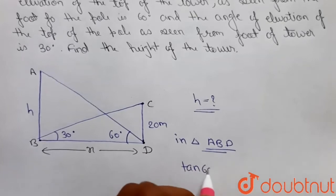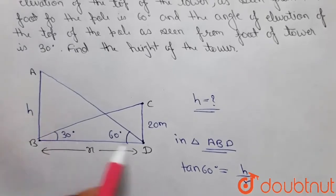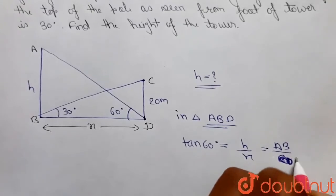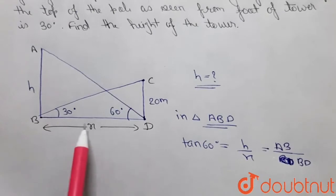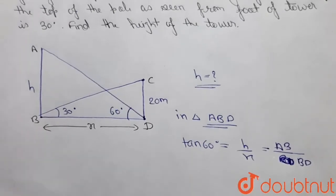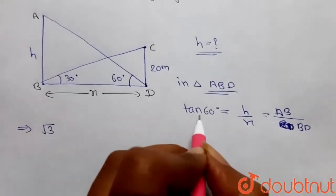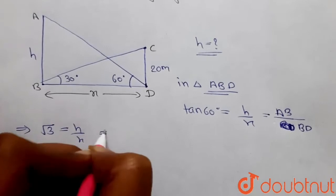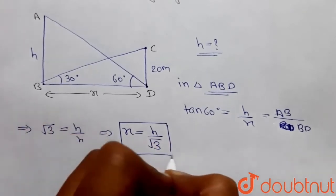In triangle ABD, tan(60°) = AB / BD = h / x. Since tan(60°) = √3, we get √3 = h / x, so the value of x = h / √3. This is our first equation.